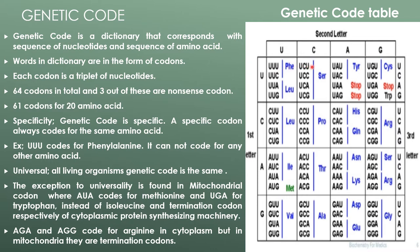Specificity of genetic code: genetic code is specific — a specific codon always codes for the same amino acid. For example, UUU codes for phenylalanine; it cannot code for any other amino acid. Universality: in all living organisms, the genetic code is the same.